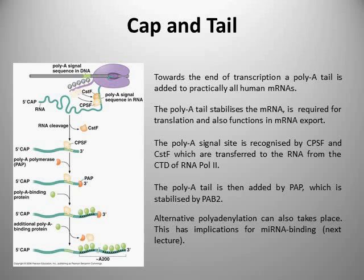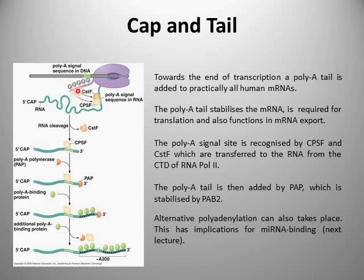How does this work? Two proteins are associated with the C-terminal domain of RNA polymerase II: the cleavage and polyadenylation specificity factor, or CPSF, and the cleavage stimulation factor, or CSTF. These are associated with this C-terminal domain and remain so until the RNA polymerase enzyme passes the poly-A signal sequence present in the DNA. Once RNA pol 2 passes this poly-A signal, these two proteins — CPSF and CSTF — are transferred from the C-terminal domain to the copied poly-A signal sequence that's now also present in the RNA.